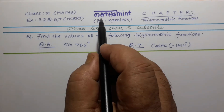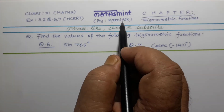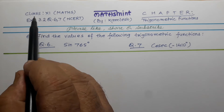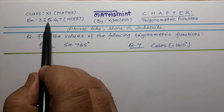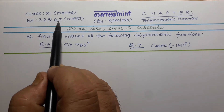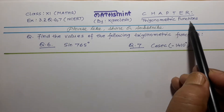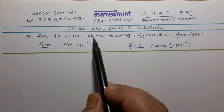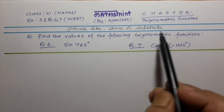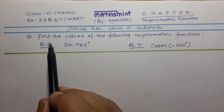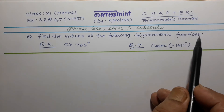Hello students. Welcome to channel Maths Mint by Kamles. Today I shall solve for class 11 math exercise 3.2 question number 6 and 7 from NCRT book. Chapter is trigonometric functions. I hope you will please like, share and subscribe this channel. Thanks. Question is: find the values of the following trigonometric functions.